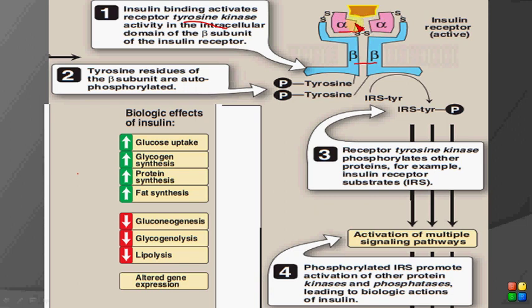When insulin binds with the alpha subunits, a conformational change occurs in the beta subunit as well, and the tyrosine kinase activity of the beta subunit is activated. The tyrosine residues of the beta subunit then undergo autophosphorylation.